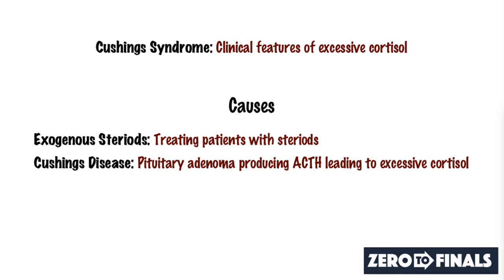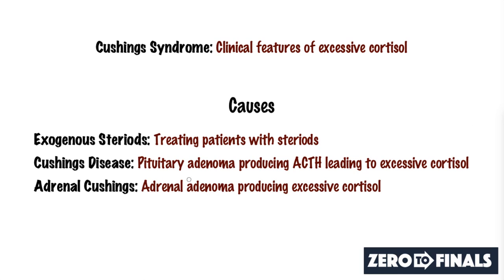The next cause is adrenal Cushing's. This is where the adrenal gland has a small tumour or adenoma that itself directly produces excessive cortisol, without any influence from other hormones.